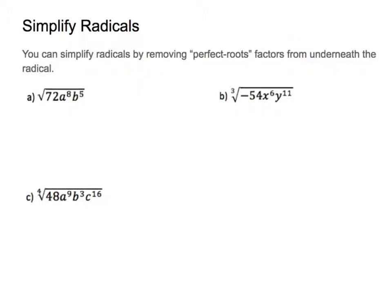Today's lesson: we're going to talk about three things, starting with simplifying radicals. Radicals are basically these root symbols — they can mean square roots, cube roots, or fourth roots. In order to simplify a radical, we need to remove what we call the perfect root factors from inside the radical.